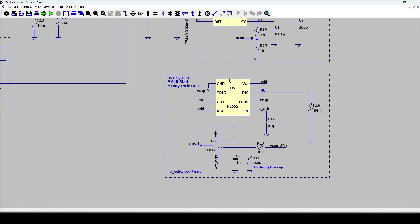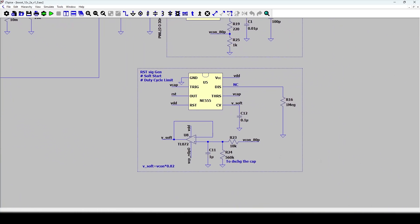I have also added reset signal generator which hard resets the PWM to limit the duty cycle at 80 percent. This is a safety feature. The same reset signal generator also adds the soft start feature. It limits the duty cycle at near zero when the circuit is starting and gradually increases it to 80 percent.